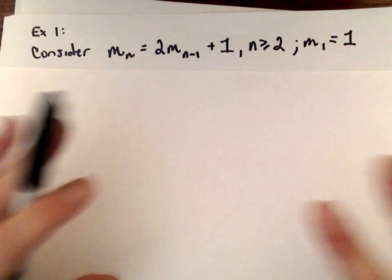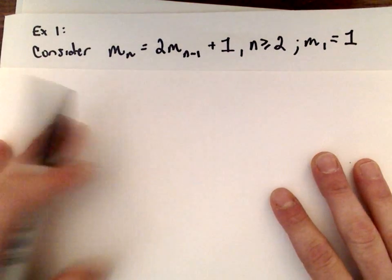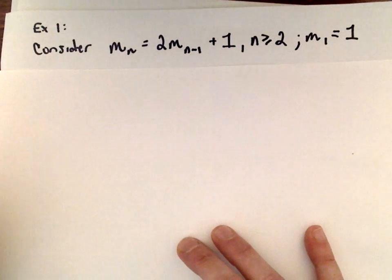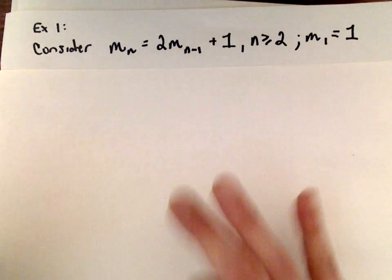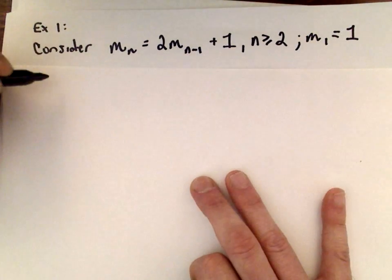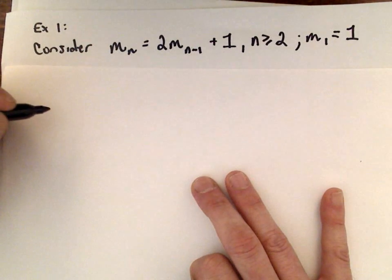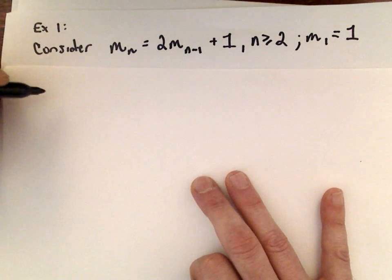All you're trying to do is spot a formula and then use induction to prove it. That's all this method of iteration is. Be careful though, you can't always find nice closed formulas for recurrence relations.